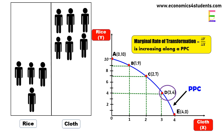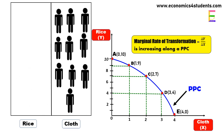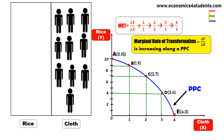Finally, to increase cloth production by one more unit, we have to shift four units of labor, which will reduce rice production by four more units. The economy will now produce four units of cloth and zero units of rice at point E on the PPC.